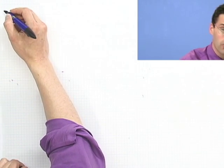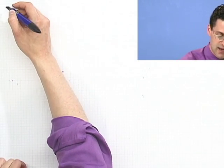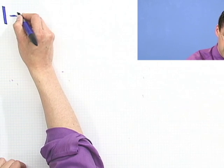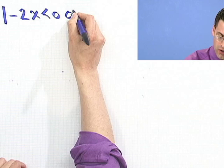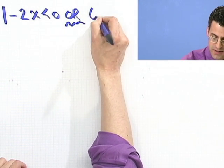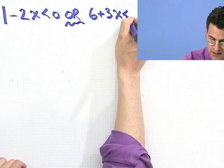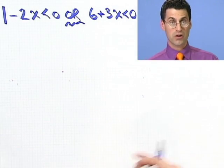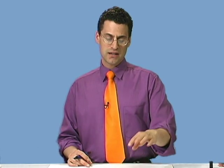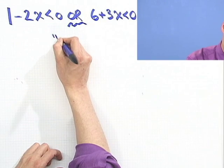Suppose I want you to find all the x's that satisfy the following: 1 minus 2x is less than 0, or 6 plus 3x is less than 0. So what's the solution set? What are all the x's that will satisfy this? Remember what an or means. Or means either x satisfies one or the other. The x doesn't have to satisfy both at the same time. And so we're looking for here a union. So when you think of or, you should think of union.